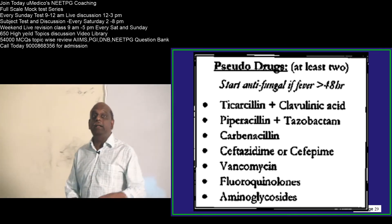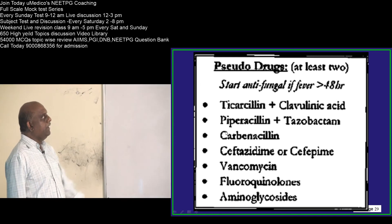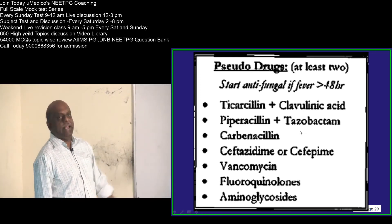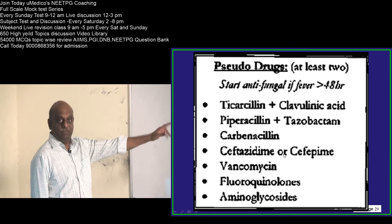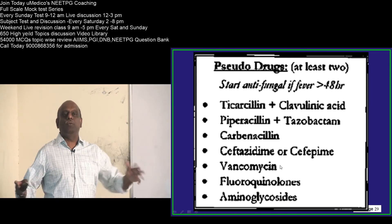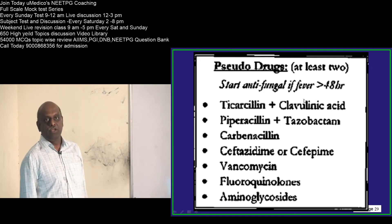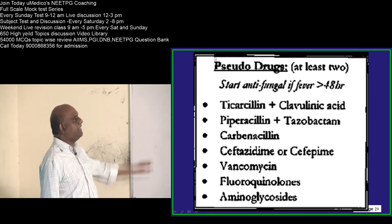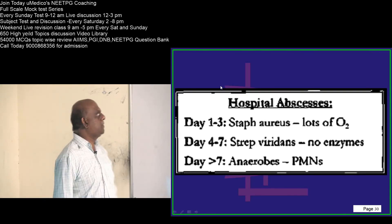Anti-pseudomonal drugs: ticarcillin-clavulanate, piperacillin-tazobactam, carbenicillin, ceftazidime, cefepime. Anti-pseudomonal cephalosporins — frequently asked in exams — are ceftazidime and cefepime. Also: vancomycin, fluoroquinolones, and aminoglycosides are considered anti-pseudomonal.